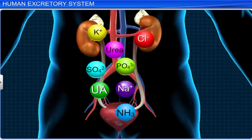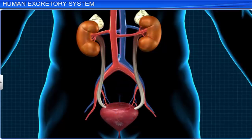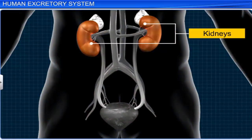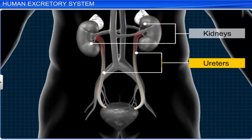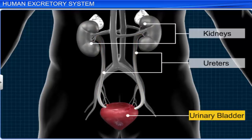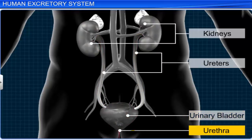The excretory system is a biological system that helps in the removal of metabolic waste products from an organism. Much of the excretion in man is executed by the urinary system, which constitutes a pair of kidneys, a pair of ureters, a urinary bladder, and the urethra.